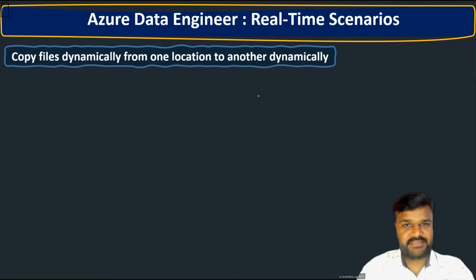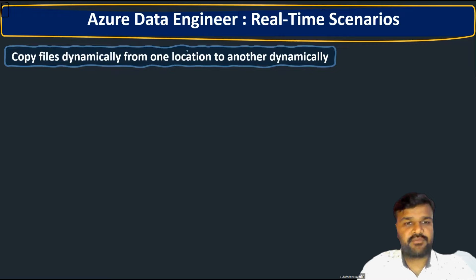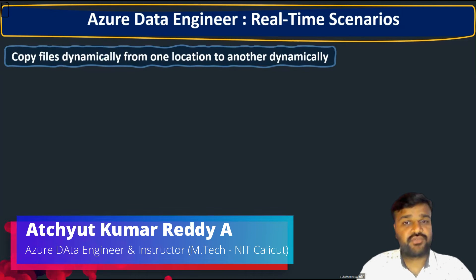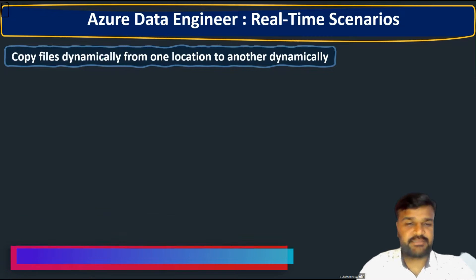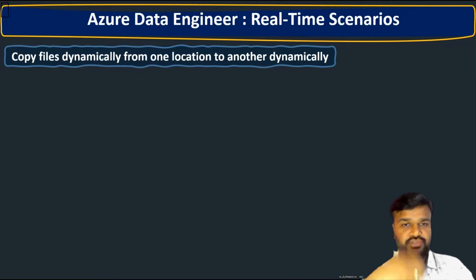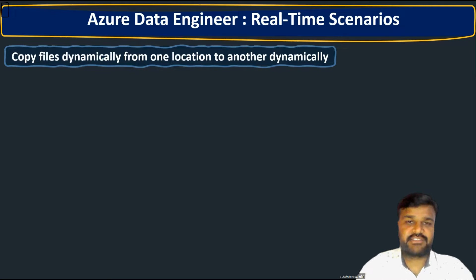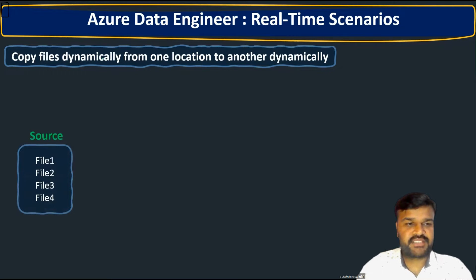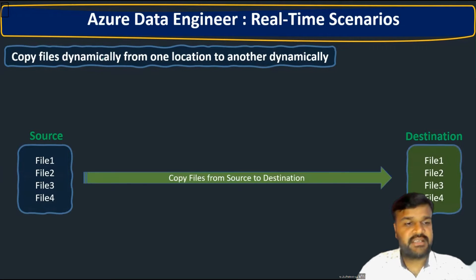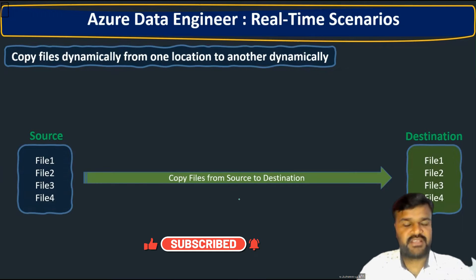Welcome to the Edufulness channel. In this lecture, let us understand a very frequently used real-time scenario: copying files dynamically from one location to another. We are not going to hard-code the file names — we will copy all files from a source to a destination. Assume that in the source we have file one, file two, file three, file four, and we want to move these files from source to destination.